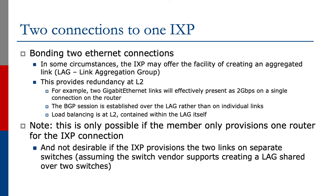This is only possible if the member provisions one router for the IXP connection. We're getting to the point now where the member probably wants to implement two connections from two separate routers. It's not desirable if the IXP provisions the two links on separate switches, unless the switch vendor supports creating a LAG that's shared over two switches, which starts getting to be quite a complex configuration and probably isn't really worth the extra complexity.